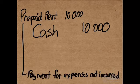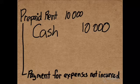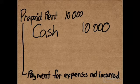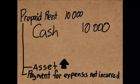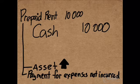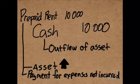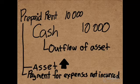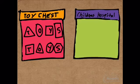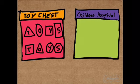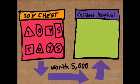Remember that when we pay in advance for any expense that will be incurred, we use Prepaid Expense and we debit it because a prepaid expense is an asset and it increases. We credit Cash because it is an outflow of an asset that serves as the advance payment.